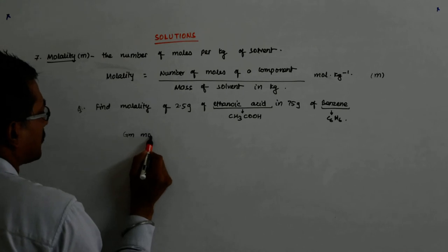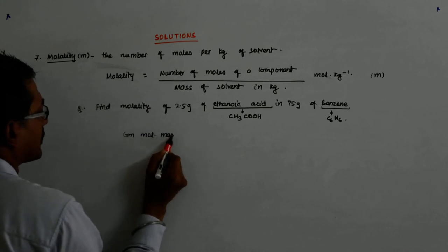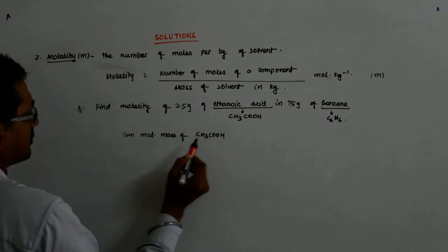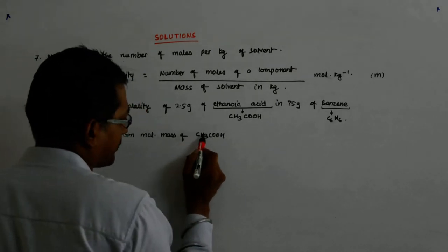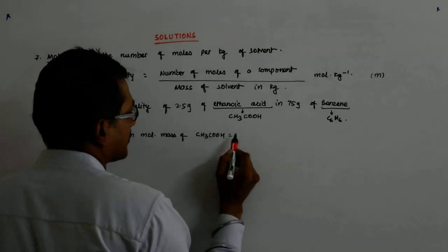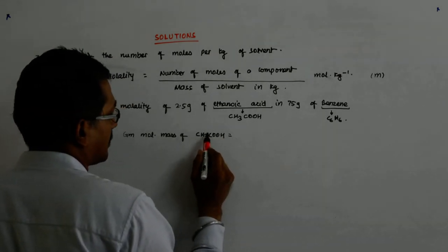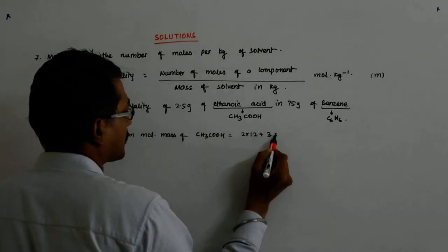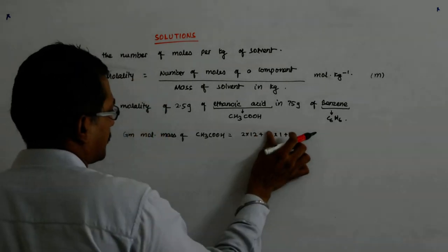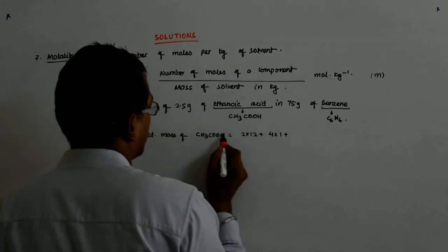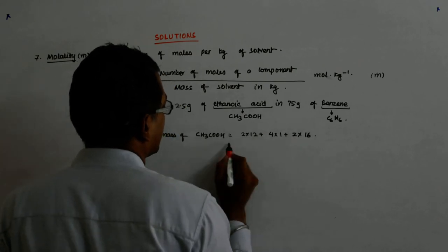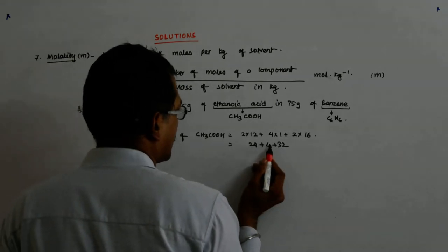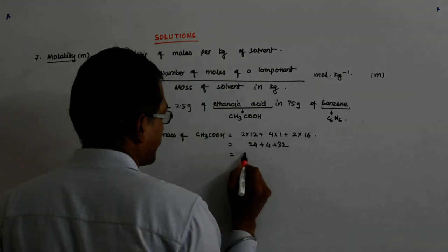So what is the gram molecular mass of CH3COOH? This is 12, and 3, 15, and 12, 2 into 12, plus 4 into 1, plus 2 into 16. So this is 24, plus 4, plus 32. Now, this is 28, and 32 is 60.